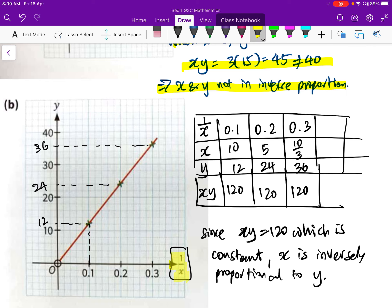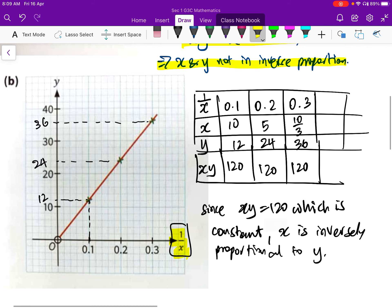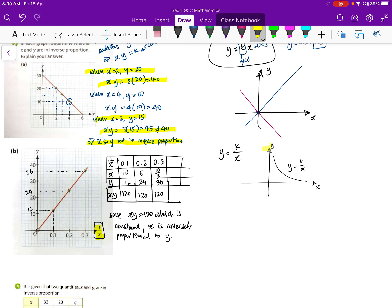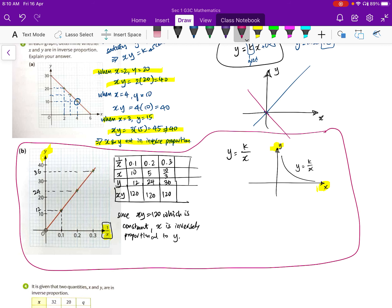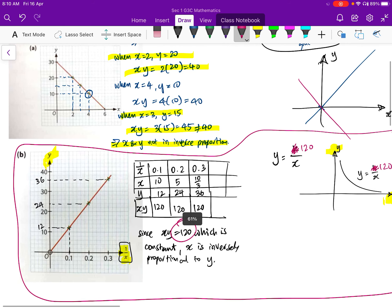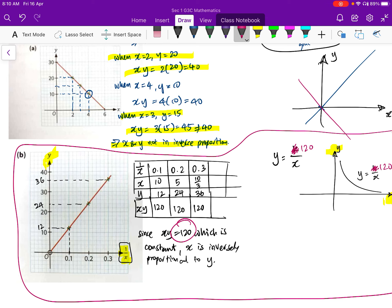Why is that happening? Because the horizontal axis is 1 over X. If I were to draw the graph of Y versus X, it will be this curve. Y versus X. Compare that to Y versus 1 over X. They are linked. And the graph of, instead of writing K, I'm going to change it to 120. This is the graph of Y equals to 120 over X. But if instead, you plot against 1 over X, you're going to get that straight line. Any questions? Samuel okay?